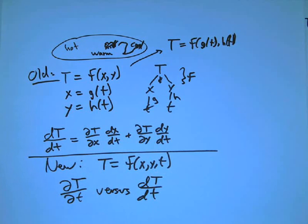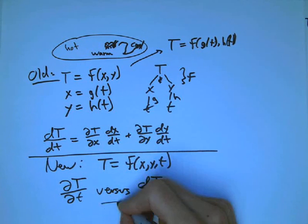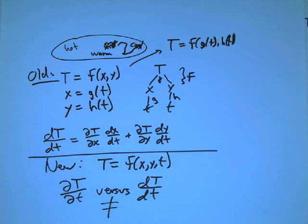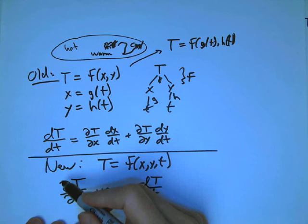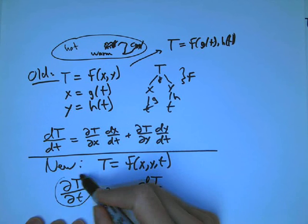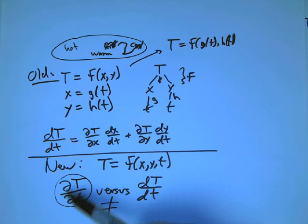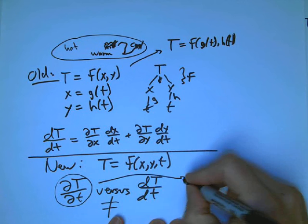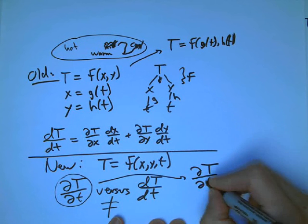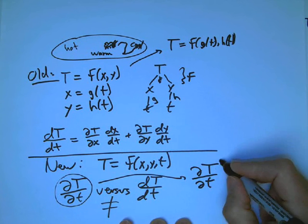The partial derivative says look at this function of three variables. The most important thing about a partial derivative is what is not included in the notation. This means take the temperature, vary the time, and keep x and y constant. That's what this notation means. If we put a bar and just put the variables here, we're reminding ourselves we're holding those variables constant.